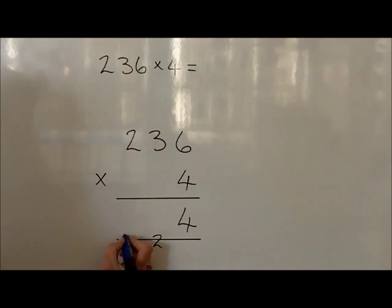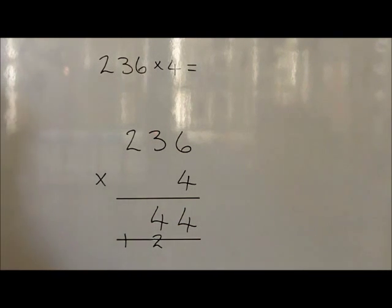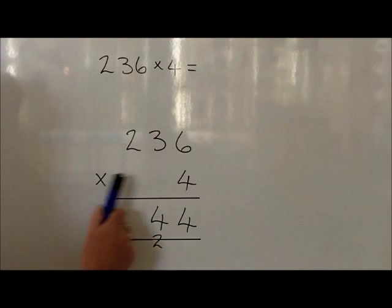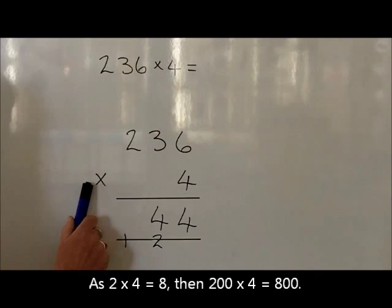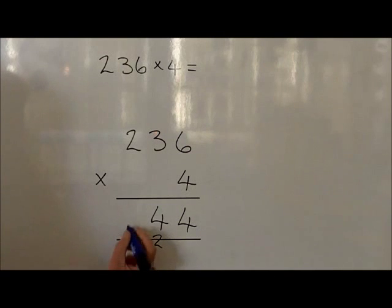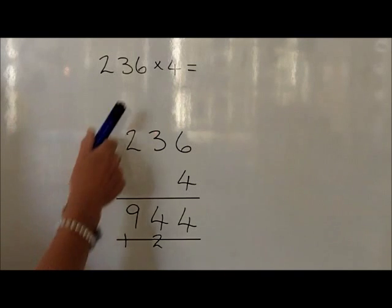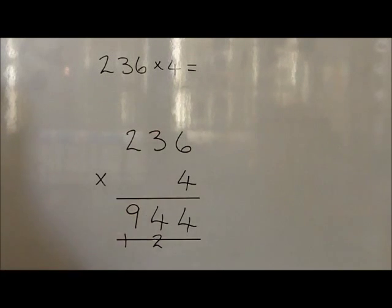We write that as a 100 carried to the hundreds column and 4 in the tens for the 40. We now look at 200 times by 4. Because we know that 2 4s are 8, 200 times by 4 is 800 — add on the 100 carried, that becomes 900. Therefore, we write a 9 in the hundreds column, and so 236 times by 4 is equal to 944.